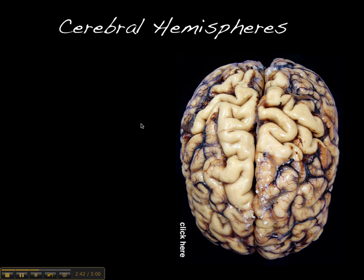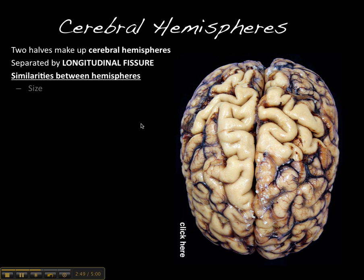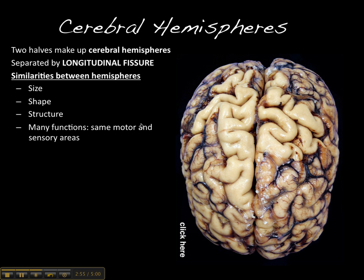The cerebral hemispheres themselves — we'll cover their functions a little later in the course — but basically there are certain similarities between them. They're the same size, they have the same shape, the same structure, and many of the functions are the same on both sides. So your motor area in your left cerebral hemisphere will be the same as the motor area in your right cerebral hemisphere.